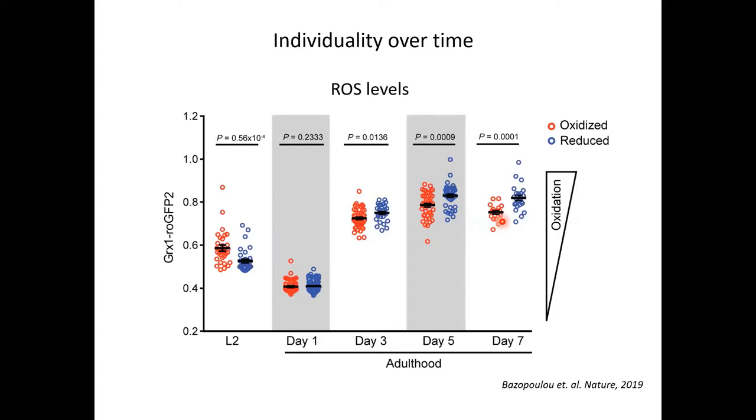Another question that comes up is, is the reason why worms that are initially more oxidized live longer? Can the reason be that now they experience lower ROS levels as they age? Does that mean now that ROS levels become damaging with age? And also, is this another time window that we could potentially intervene to affect lifespan?